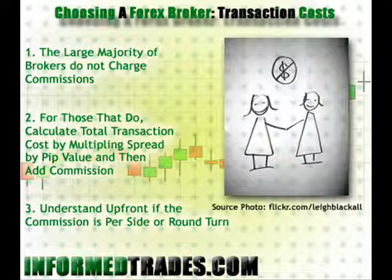Lastly, in regards to commissions, when you inquire about the commission level, you want to know whether the commission rate a broker is quoting is per side or round trip. If the commission in the example I just gave was per side, then this would mean that there is a $10 commission to open the trade and a $10 commission to close the trade, bringing the total commission for the trade to $20. If it is round trip, then this means that the commission to open and close the trade is $10.